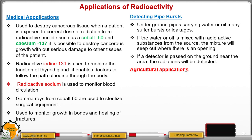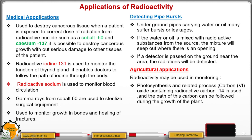Number three, we have agricultural applications. Radioactivity may be used in monitoring photosynthesis and related processes. For example, carbon dioxide containing radioactive carbon-14 is used, and the path of this carbon can be followed during the growth of the plant. This allows you to monitor the process of photosynthesis.